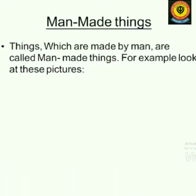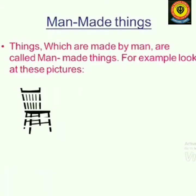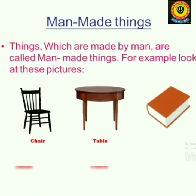Next is man-made things. Things which are made by man are called man-made things. For example, look at this picture — chair, table, books. Apart from these, there are so many more like pencil, bag, ball — all are man-made things.